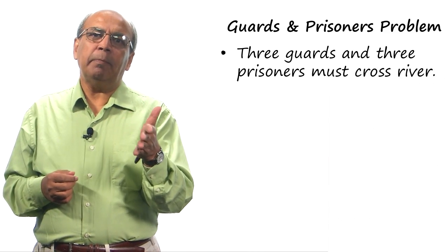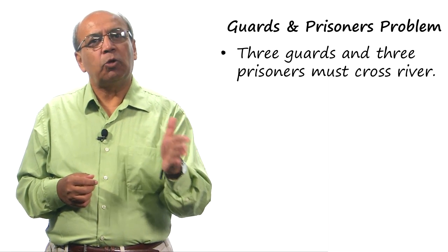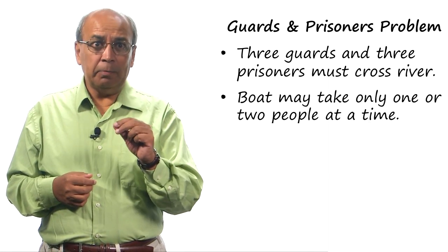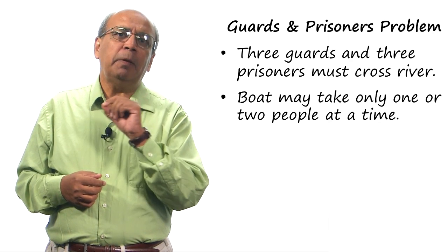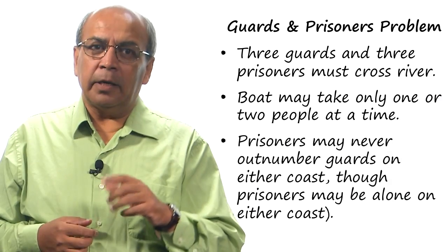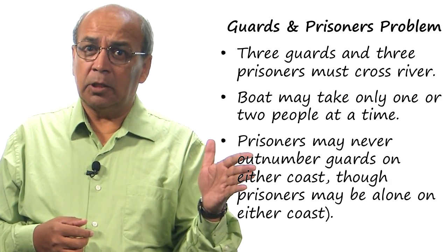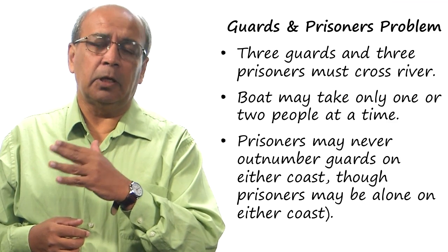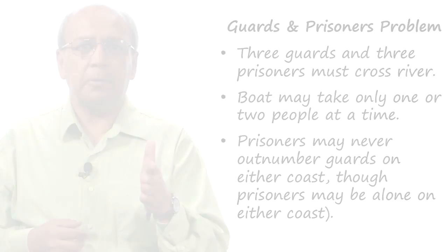Imagine that there are three guards and three prisoners on one bank of a river, and they must all cross to the other bank. There is just one boat, and it can only take one or two people at a time, not more, and the boat cannot travel alone. On either bank, prisoners may never outnumber the guards, because if they do, they will overpower the guards. So the number of guards must be at least equal to the number of prisoners on either bank.